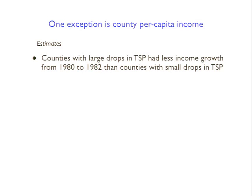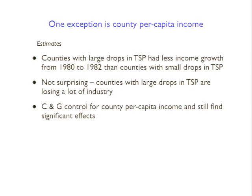They can control for county per capita income by including it as a right-hand side variable in the regressions. When they do, they still find significant effects. That's good news, but it shouldn't totally erase any doubts about the result. Ideally, what we would like to do is compare two groups of counties that are otherwise identical except for the treatment.